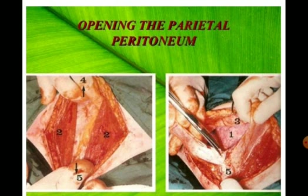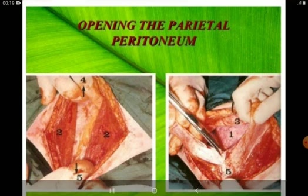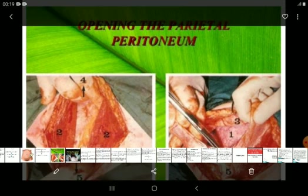The layers are cut step by step: skin, fat, rectus sheath. After cutting the sheath, we address the muscles. With the help of fingers, we stretch the muscles laterally. Next, the peritoneum is cut.